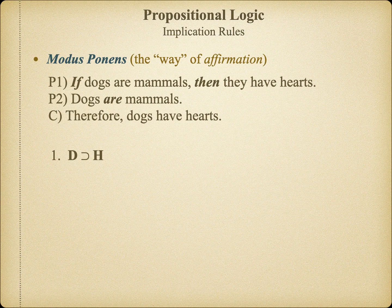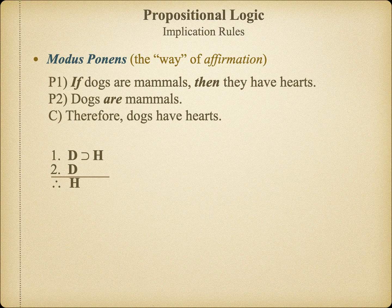Symbolized, the validity of the argument is even more obvious. In this case, D is asserted to be a sufficient condition for H in premise 1. In premise 2, we're asserting that indeed D is the case. Thus, it must be the case that H. Notice that we've introduced a new symbol — three dots in a triangle — to indicate the concluding line of the argument. This is shorter than writing out the word 'conclusion,' and also helps us avoid confusing the letter C with a premise in the argument.